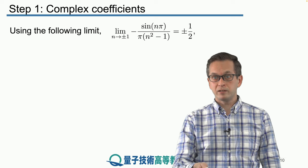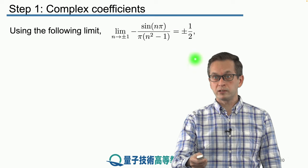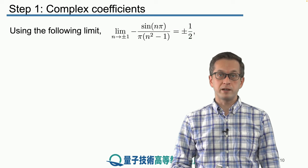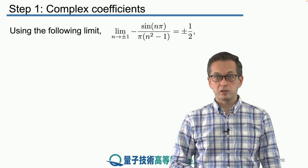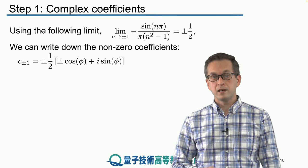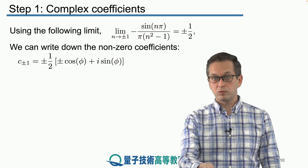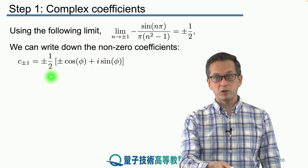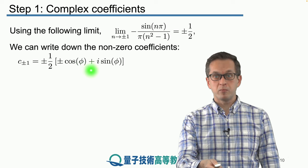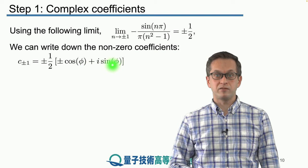So by taking the limit of the first part of the product, where n is equal to plus and minus 1, we can see that that is equal to plus or minus 1 over 2. So finally, our complex coefficients are given as follows. c of plus or minus 1 is equal to this complex number. It's plus or minus 1 over 2 times plus or minus cosine of φ plus i sine φ.